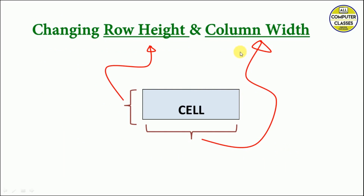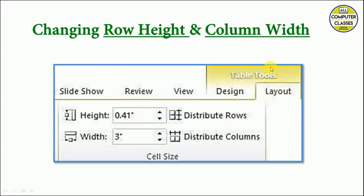Next is changing the row height and column width. Width refers to this side of a cell, and row height refers to the vertical measurement. To change it, we click on the cell whose height or width we want to change. If we want to change the height and width of all cells in a table, then we need to select the entire table; otherwise we just click on the cell where we want to apply the changes.